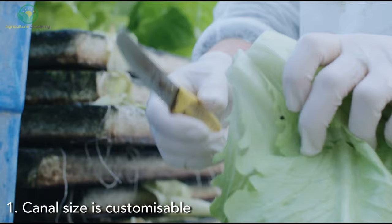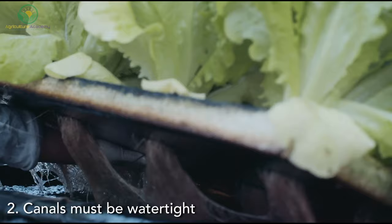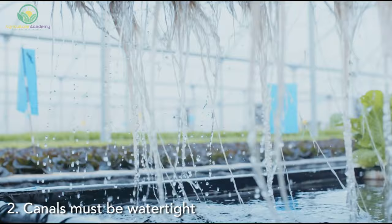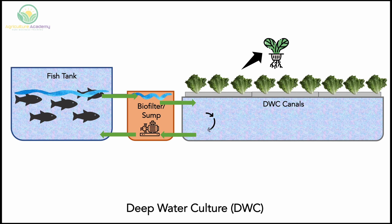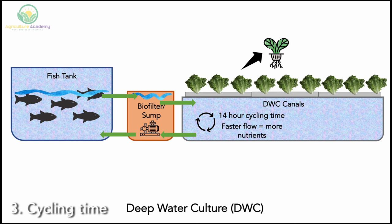Second, it is essential your canals be watertight. It might be easier to control this with smaller canals, but as you increase their size a great deal of effort must be invested into construction and waterproofing. Third, try to aim for a cycling time of 14 hours. This will allow for adequate nutrient replenishment to the root zone. A faster flow rate will also help supply the roots with more nutrients. You must also make sure the water is sufficiently aerated with dissolved oxygen. You can achieve this by adding air stones into the canals or installing bench re-siphons to aerate the water as it enters the canals.